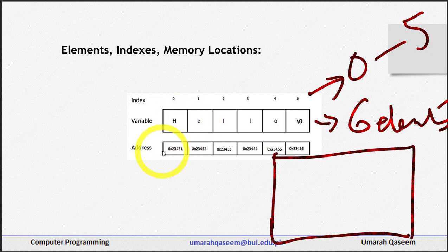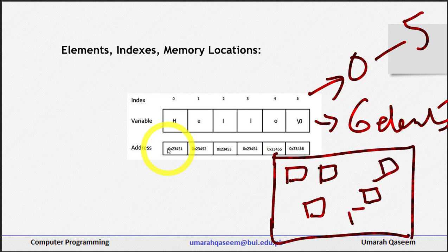But we discussed before that an array is stored at consecutive memory locations. The elements of an array are not stored at random places; they are stored at continuous memory locations, contiguous memory locations. So that means they will be stored side by side.